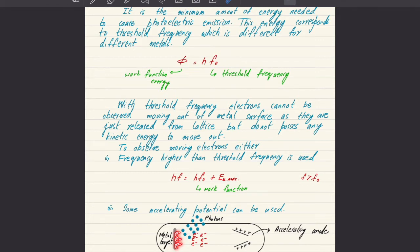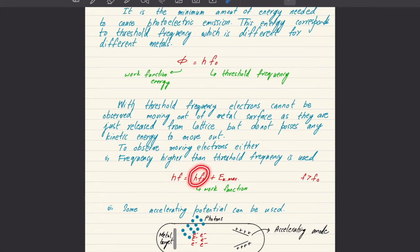To make electrons travel, either you provide an accelerating potential so that electrons can be pulled out of the metal and seen traveling, or you use a frequency bigger than the threshold frequency. If you use a frequency higher than the threshold frequency, you are providing energy higher than the work function energy. Part of the energy goes as the work function energy to release the electron from the metal lattice, and the remaining part becomes the kinetic energy of the electron.